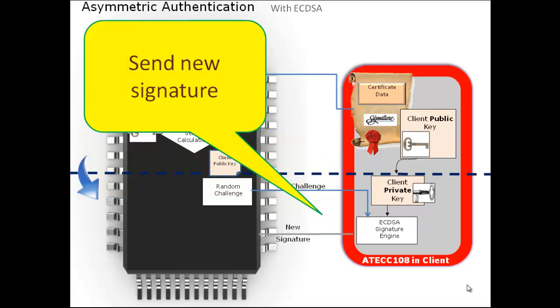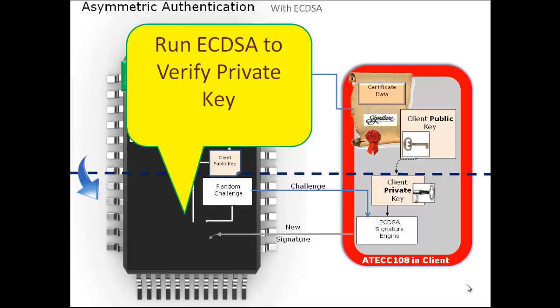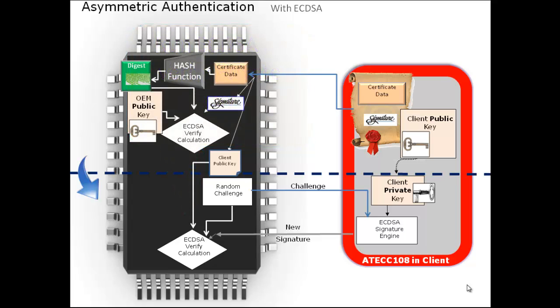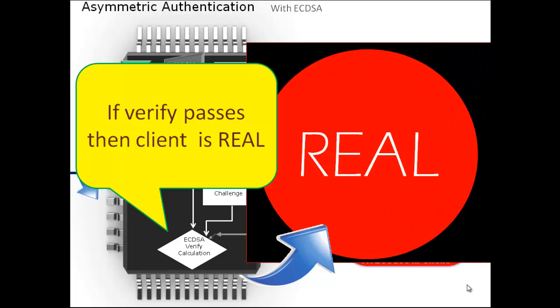The new signature is sent to the host and used as an input to run the ECDSA verify calculation, using that signature, the client's public key that was verified in Phase 1, and the very same random challenge that was used to create the signature in the client. If it passes, then the client is considered as real.